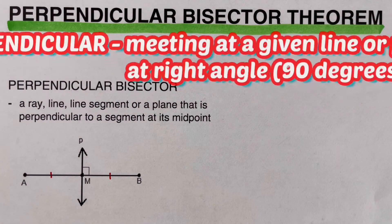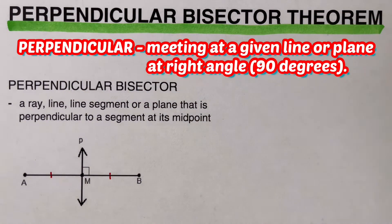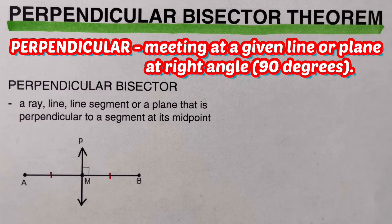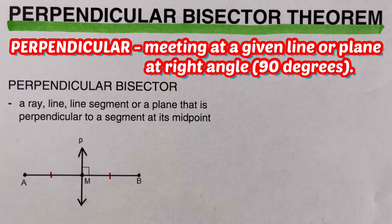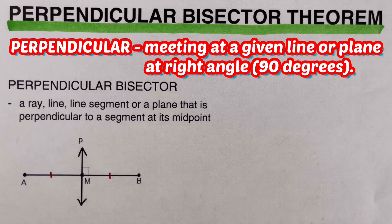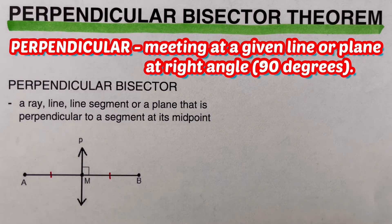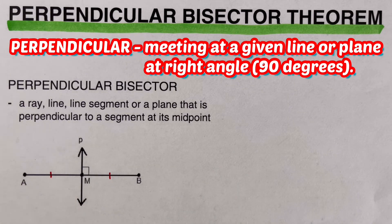Perpendicular means an act of meeting at a given line or plane at a right angle. This means that the angle formed is 90 degrees — it should be a right angle.